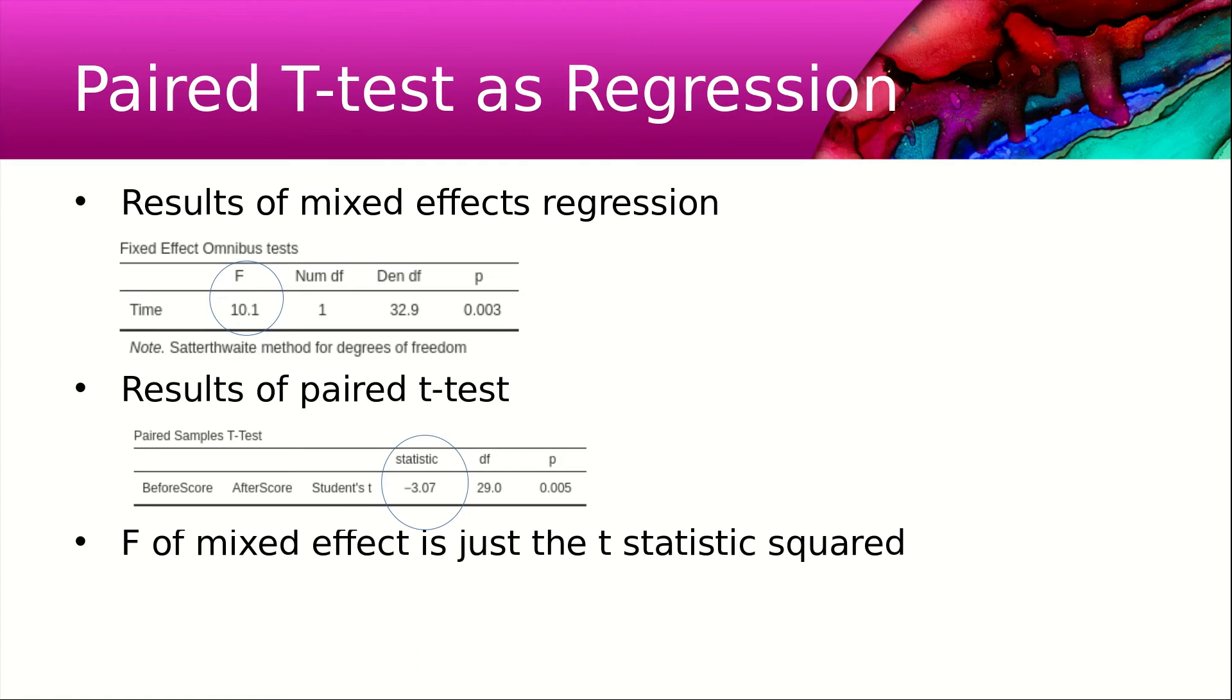Just as the paired t-test, they give us an F-score of 10.1, which is different from the t-score of minus 3.07. But what we need to realize is that if we square the t-statistic, we get the F-statistic. The results are the same.